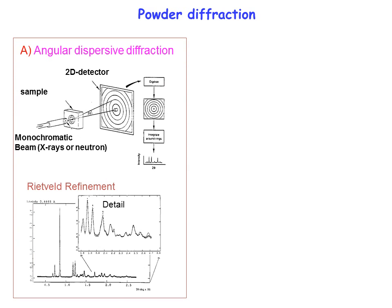There are two types of powder diffraction. One uses a monochromatic beam: you have the sample, a two-dimensional detector, and then you integrate. You can then refine the obtained diffractogram; one refinement method is Rietveld refinement. Refining means fitting different structural parameters to reproduce the experimental data.